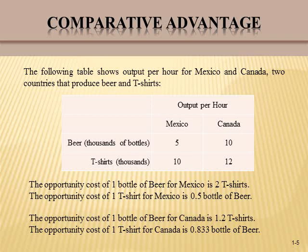Moving to the opportunity cost of one t-shirt: for Mexico, it is 5 over 10, which equals 0.5 bottles of beer. For Canada, the opportunity cost of one t-shirt is 10 over 12, which equals 0.833 bottles of beer. Since 0.5 is less than 0.833, Mexico is enjoying a comparative advantage in the production of t-shirts because Mexico has a lower opportunity cost than Canada.